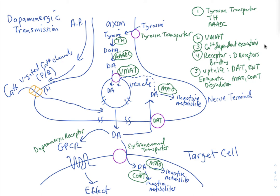No dopamine receptors are ligand-gated ion channels. Removal of dopamine from the junction is accomplished through the dopamine reuptake transporter, DAT, or extraneuronal transporters. Enzymatic degradation involves monoamine oxidase, found in the dopaminergic nerve terminal and extraneronally, and COMT, catechol-O-methyltransferase, found extraneronally as well.